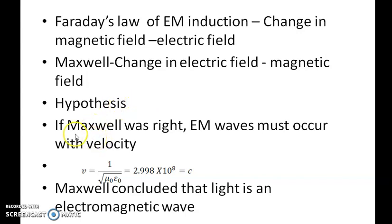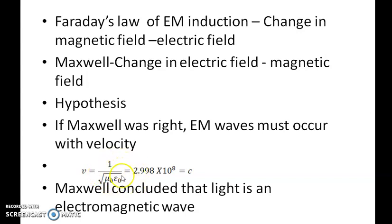Maxwell used his theory and found that if his hypothesis is true, the electromagnetic waves should have a velocity v = 1/√(μ₀ε₀). Here μ₀ is the permeability of free space and ε₀ is the permittivity of free space. When substituting those values, he found that this velocity is approximately equal to 3 × 10⁸ meters per second, which is equal to the velocity of light. From this, Maxwell deduced that light is nothing but an electromagnetic wave.